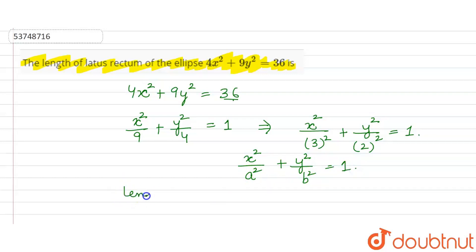And the length of the latus rectum is what? The formula of the length of the latus rectum is 2b² upon a.